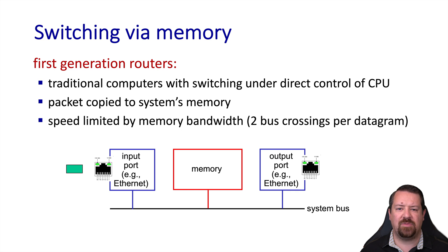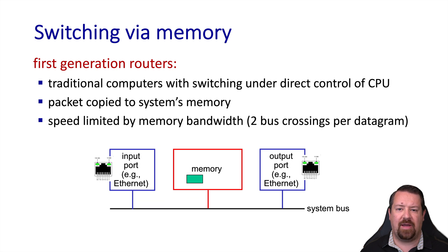Early routers, as well as many inexpensive routers today, were architected like general-purpose computers, and this meant they used a shared memory approach to switching packets. The packet would arrive on the input port, be copied into the system memory, the CPU would make the forwarding decision, and send it back out the appropriate interface. This means that each packet must cross the memory bus twice, and the overall system is limited by the I/O bandwidth of the memory. We can see an example of that here with the packets coming in, being copied into memory, and then forwarded out based on the CPU's forwarding decision.